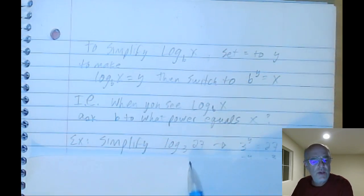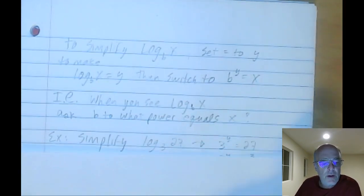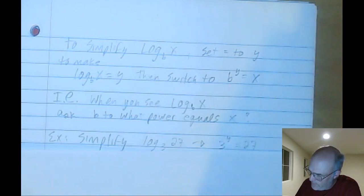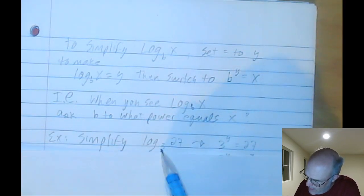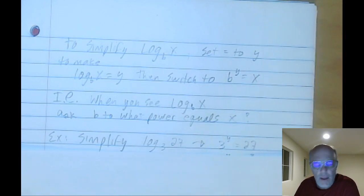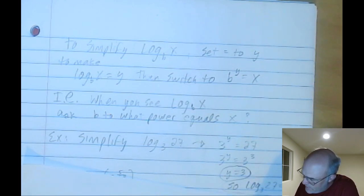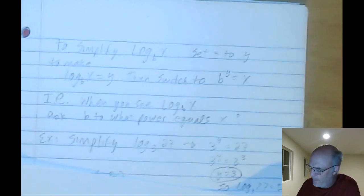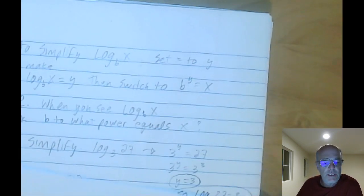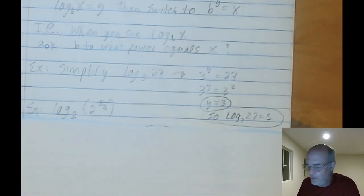Log 3 of 27. That means 3 to what power equals 27? So I just stuck a variable Y there. It doesn't take long to figure out that 3 to the 3rd is 27, so Y equals 3. So you say that the log of log 3 of 27 equals 3. Equals 3. There it is.